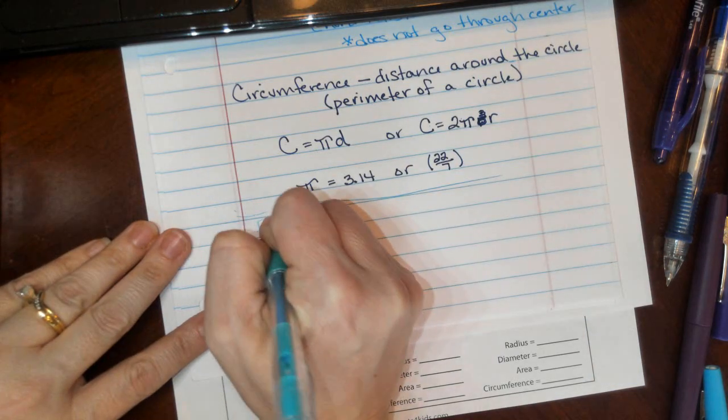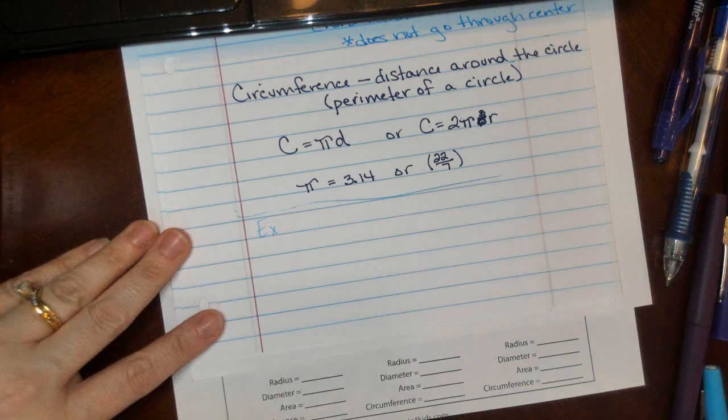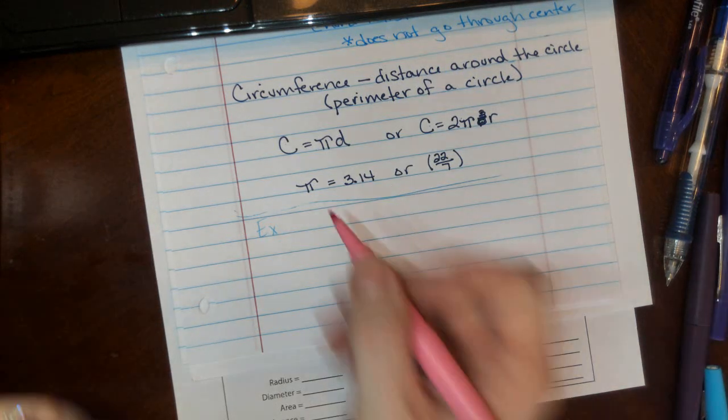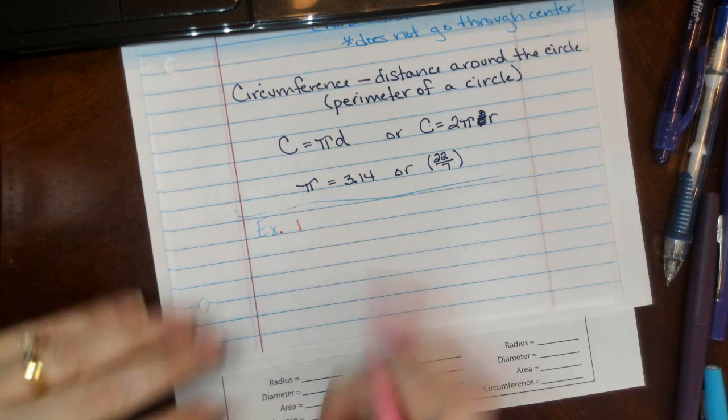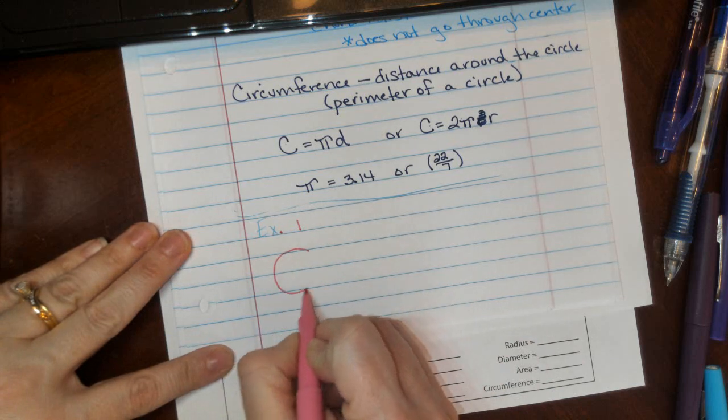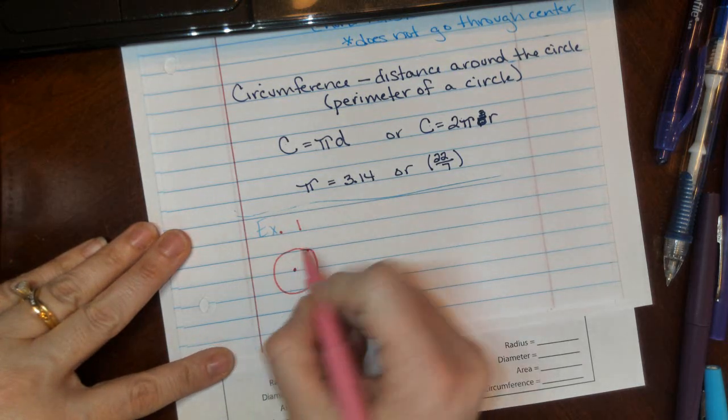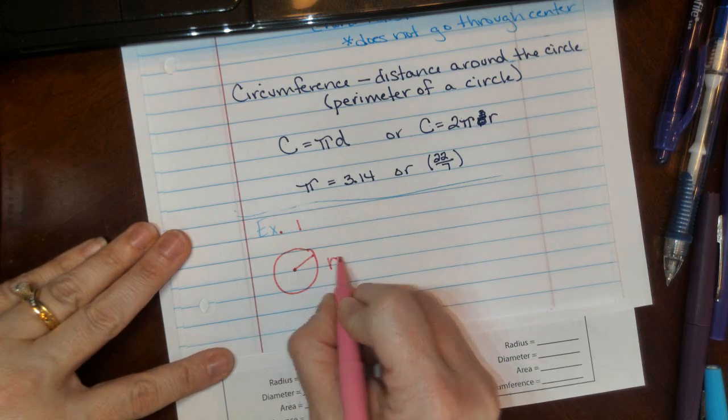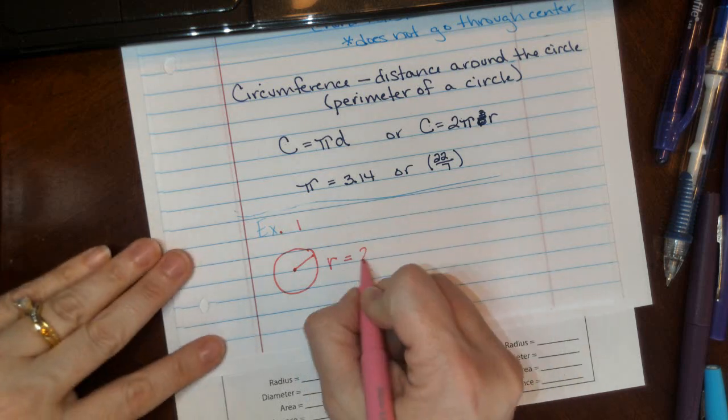Hey guys, let's look at an example or two for circumference. So example number one: I have a circle with a radius of two centimeters.